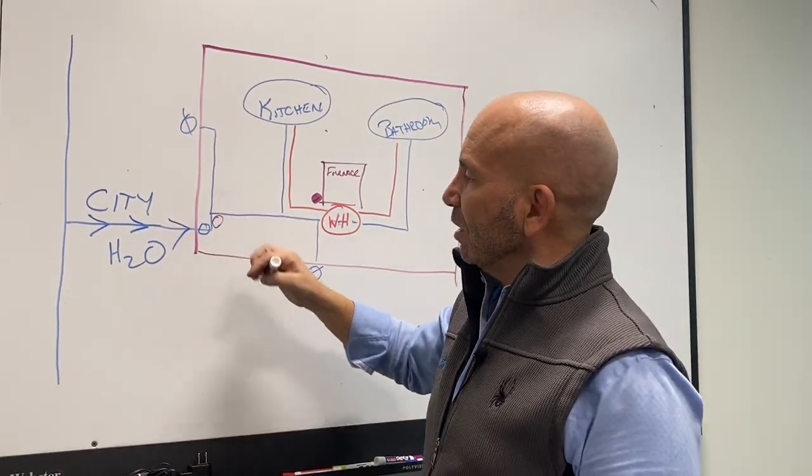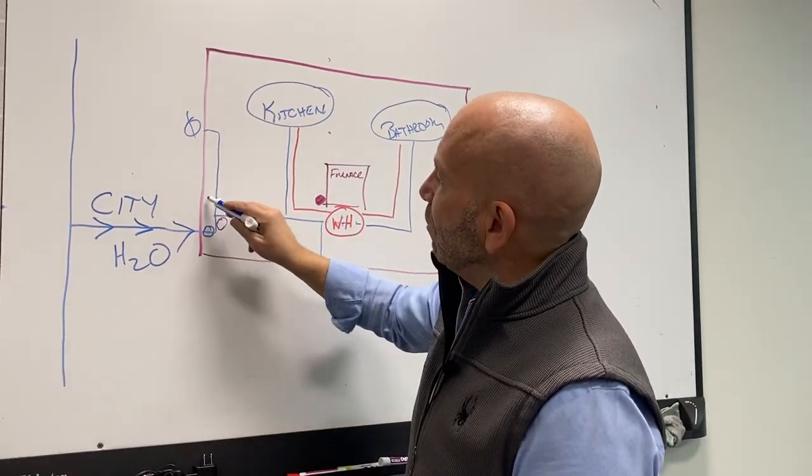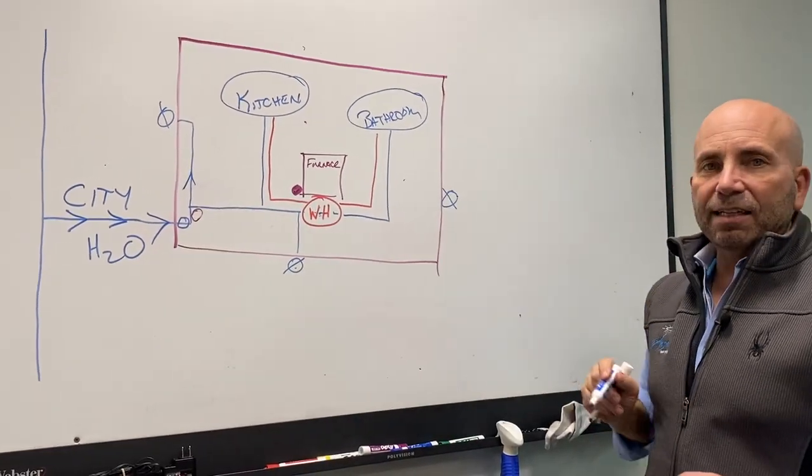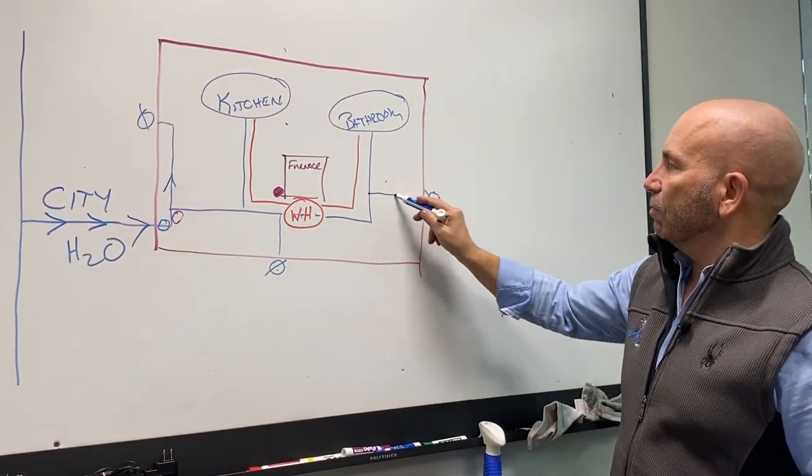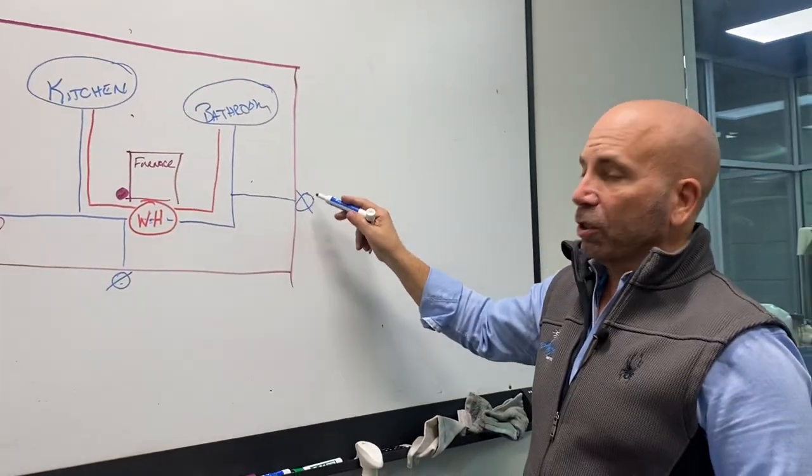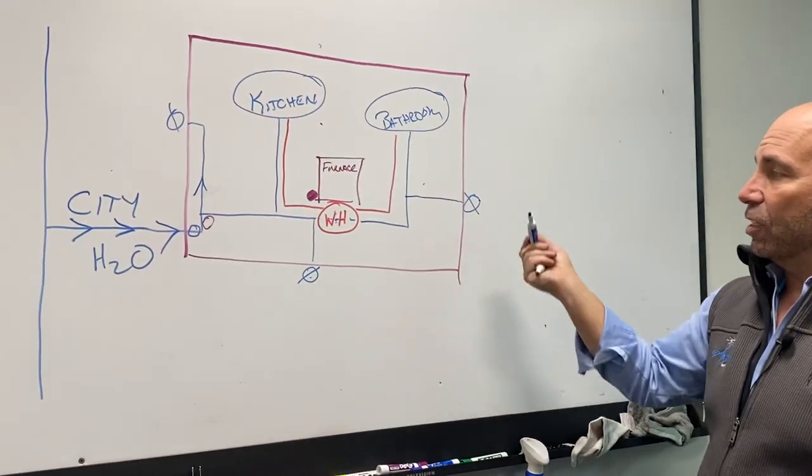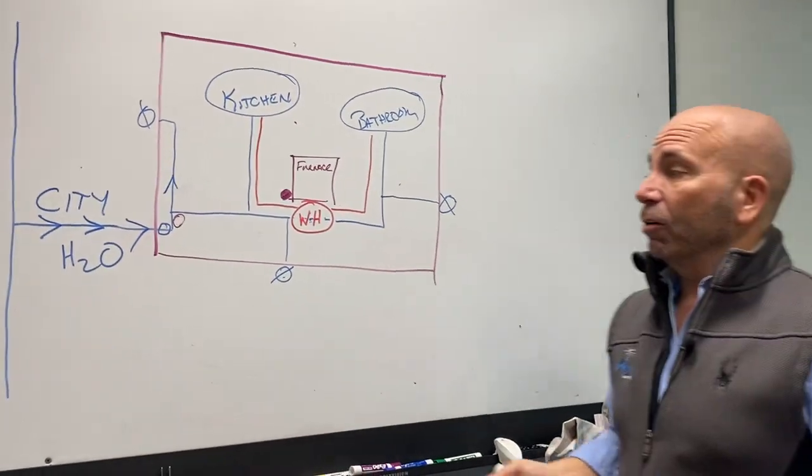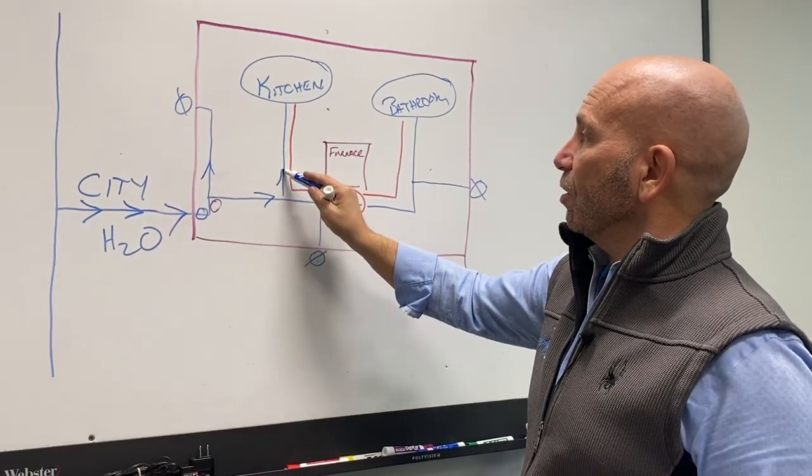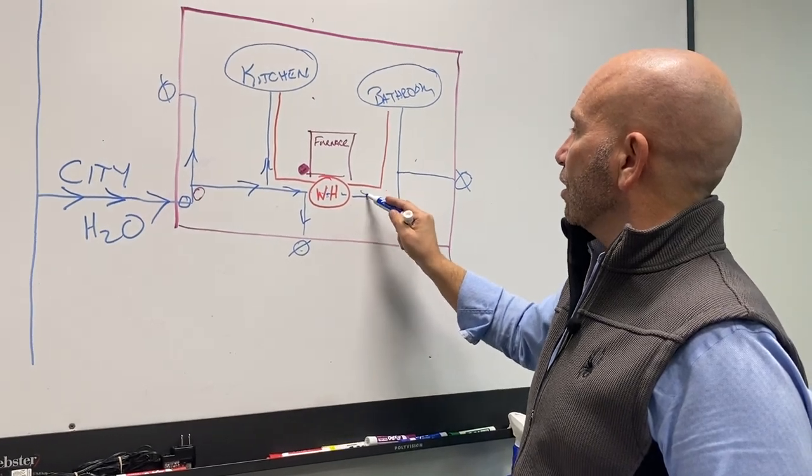The problem is, as you can see, that water is going to continue to go up to that outside silcock. This is an outside silcock and that's an outside silcock. By the way, that would have a water line to it. So these circles with an X represents outside faucets, and so that means we can turn it off.